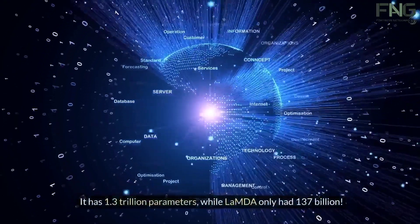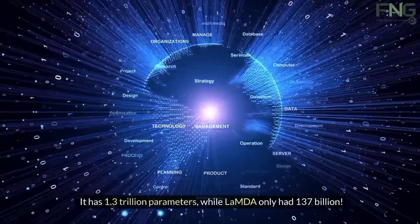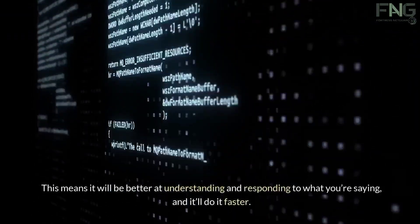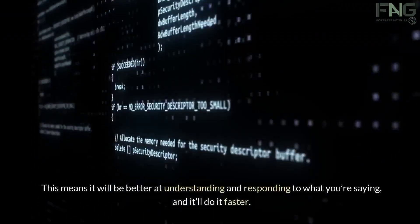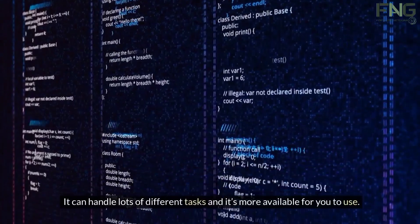It has 1.3 trillion parameters, while Lambda only had 137 billion. This means it will be better at understanding and responding to what you're saying, and it'll do it faster. It can handle lots of different tasks, and it's more available for you to use.